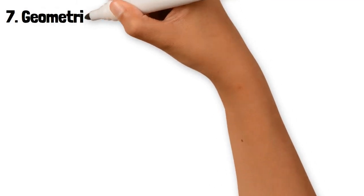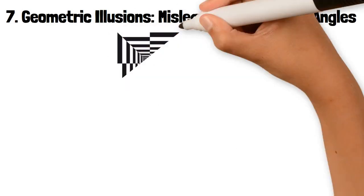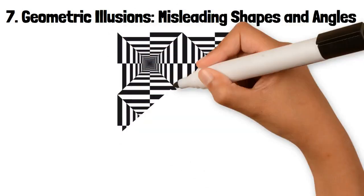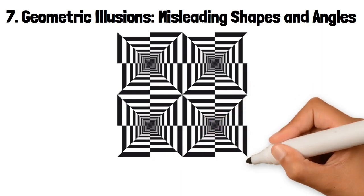7. Geometric Illusions: Misleading Shapes and Angles. Geometric illusions involve shapes, angles, or lines that appear distorted or differently sized due to their arrangement or the surrounding context.